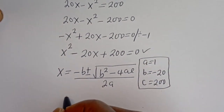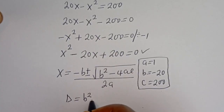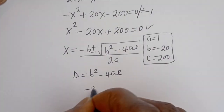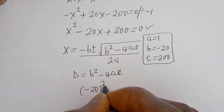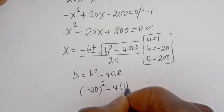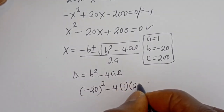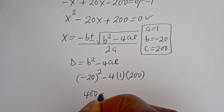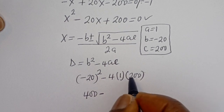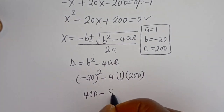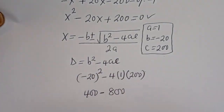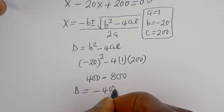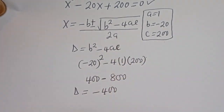The discriminant D equals b squared minus 4ac. We have minus 20 squared minus 4 multiplied by 1 multiplied by 200. Minus 20 squared is 400, minus 4 times 1 times 200 is 800. So D equals 400 minus 800, which is minus 400.